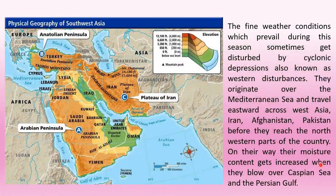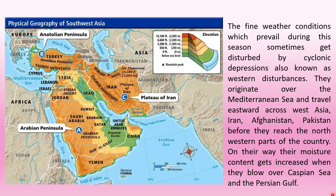The fine weather conditions which prevail during this season sometimes get disturbed by shallow cyclonic depressions known as western disturbances. They originate in the Mediterranean Sea and travel eastwards across West Asia, passing through areas like Iran and Pakistan before they reach the north-western part of the country.